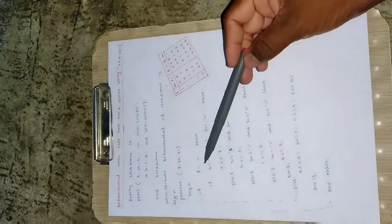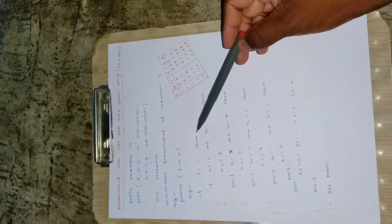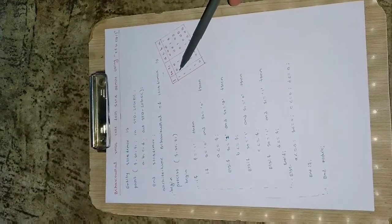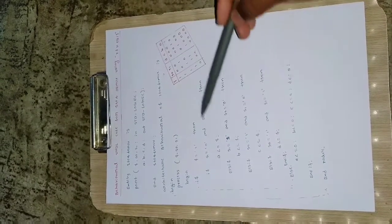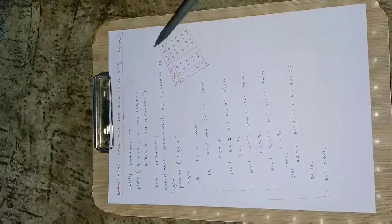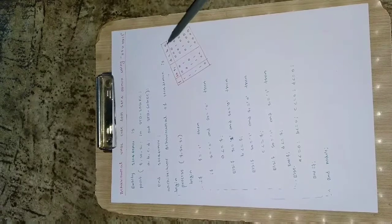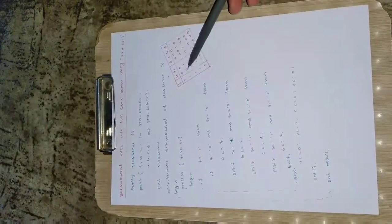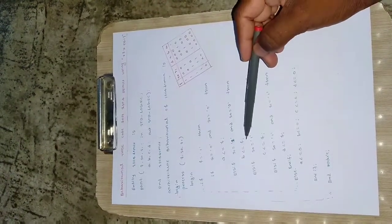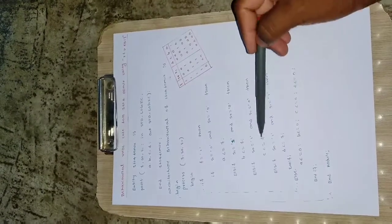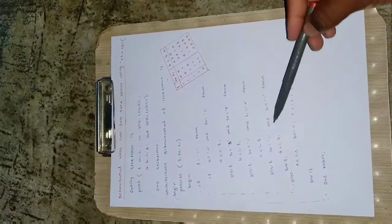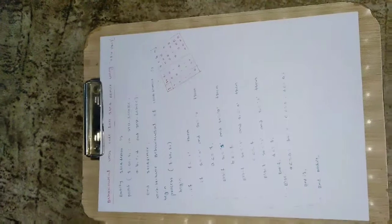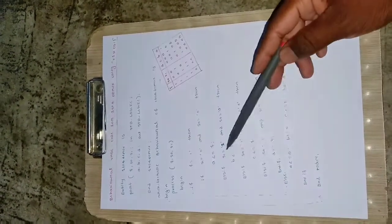Now the actual code: if F equals '1' then — first it checks whether the input is high or low. If F equals '1', then if S1 equals '0' and S0 equals '0', that is the first condition — A is assigned with F, so A will be assigned the value 1. Else if S1 equals '0' and S0 equals '1', then B is assigned with F. If S1 equals '1' and S0 equals '0', that is the third condition, C is assigned with F. And if S1 equals '1' and S0 equals '1', that is the last condition, D is assigned with F. Then end if — this inner if statement ends here.